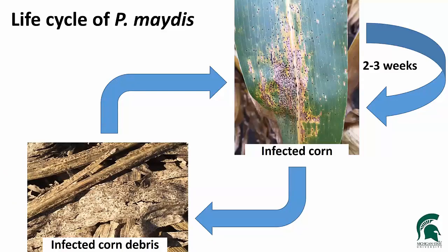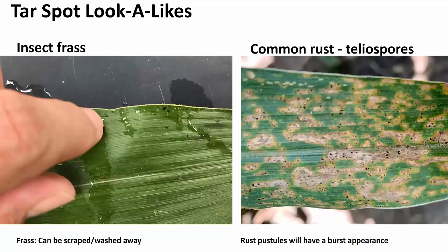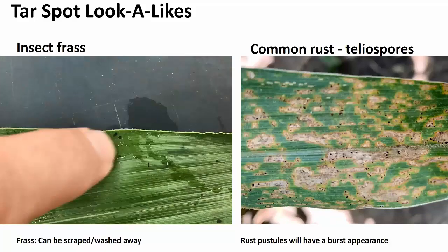In terms of the life cycle, the disease is essentially here in the lower half of Michigan. It's coming from infected corn debris on the ground. Unfortunately, the spores can move some distance, so even if you're doing everything right in terms of crop rotation, you're not going to escape this disease — spores can move in from neighboring areas. We get an infection of corn, and then two to three weeks later it begins to multiply, releasing more spores and infecting the plant again.